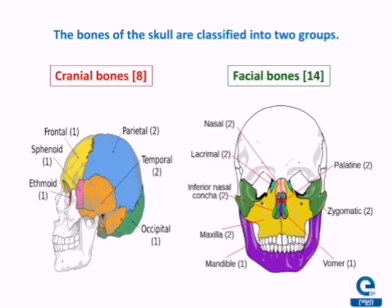The 14 facial bones include 2 nasal, 2 lacrimal, 2 inferior nasal concha, 2 maxilla, 1 mandible, 1 vomer, 2 zygomatic, and 2 palatine bones.